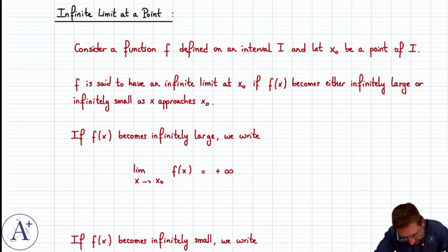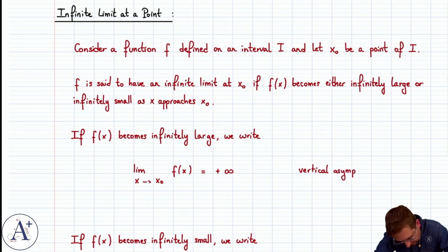On the graph, there's a vertical asymptote, and the equation is x equals x0.